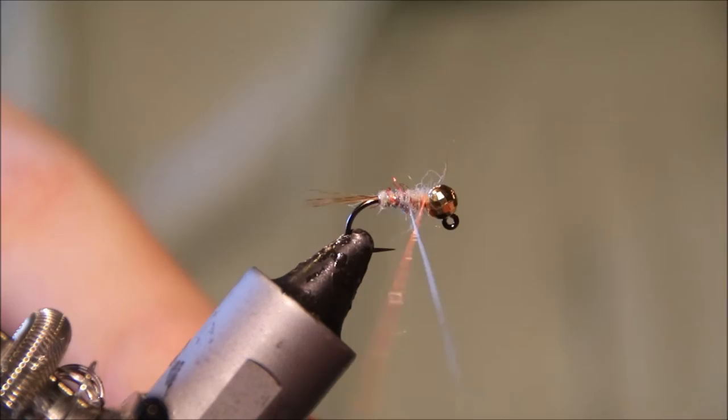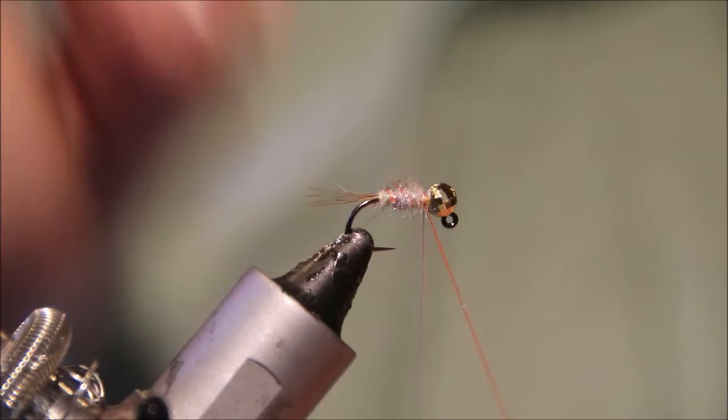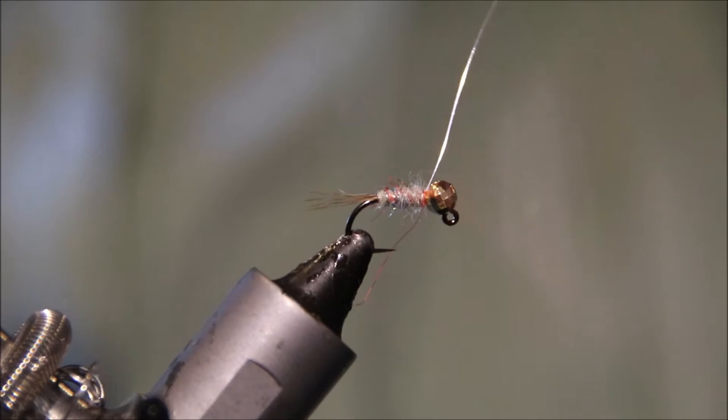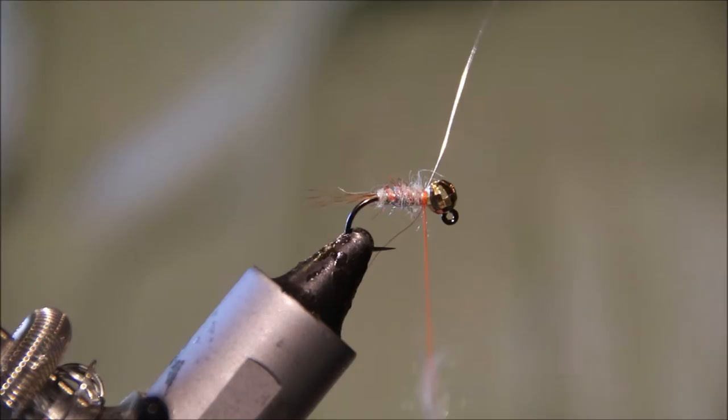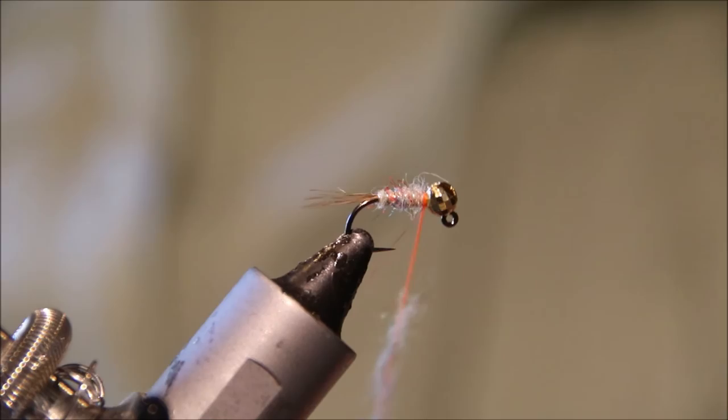Wind my rib forward, four or five even turns, come across the thread, turn the front to lock it, and then just bend and break the wire away.